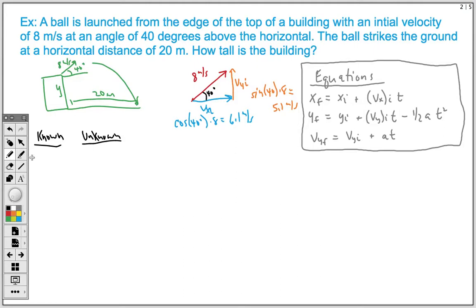So my known values, we said vxi. That ended up being 6.1 meters per second. Our vyi ended up being 5.1 meters per second. And then what else do we know based on the problem? Well, we know the distance. The horizontal distance. So that's our xf. Our final distance was 20 meters.